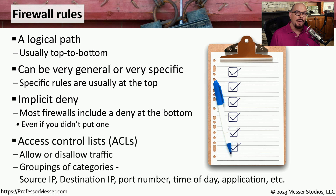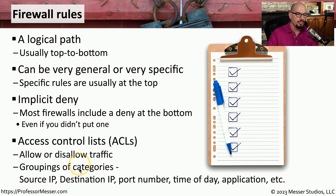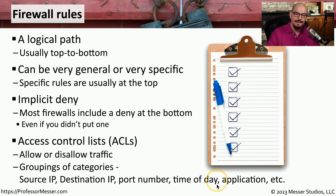Another way to describe a rule base or policy list in a firewall is an access control list, or ACL. It would be common to see in a firewall a rule that has a source IP address, a destination IP address, a port number, time of day, the name of an application, and other variables as well.